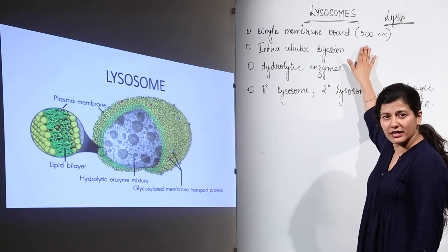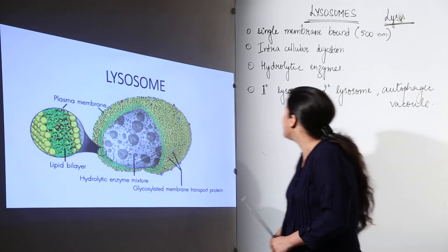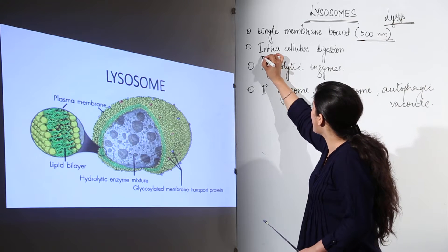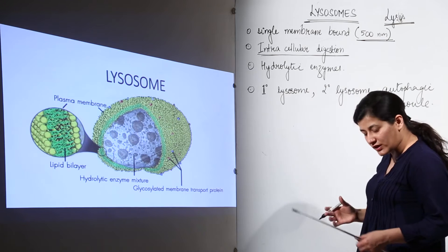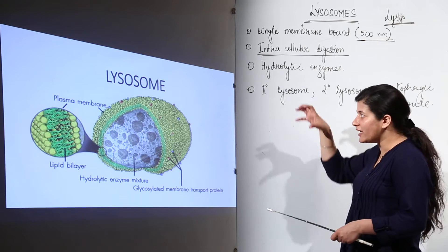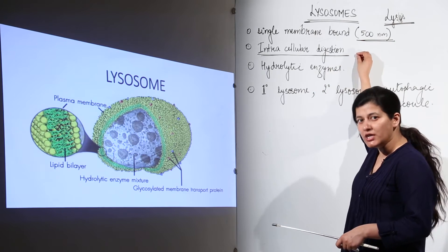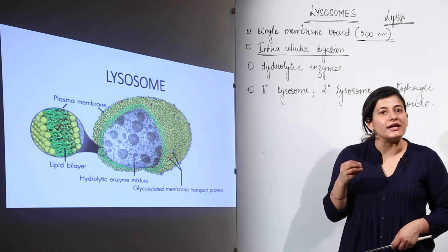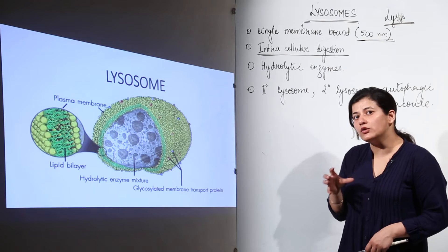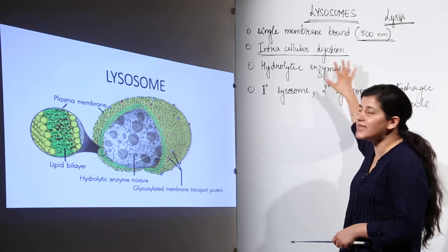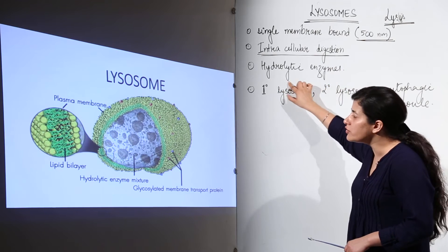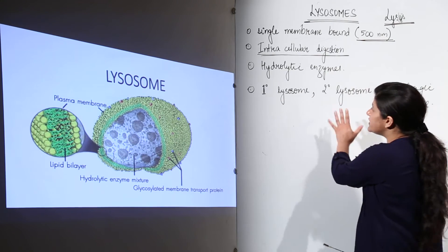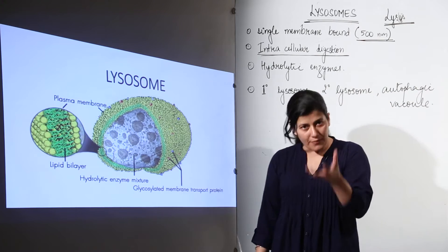It is a single membrane-bound structure. The width of the membrane is around 500 nanometers. This organelle is responsible for intracellular digestion — that means digestion within the cell. Digestion here is not the digestion of eating food; it is the breakdown of a complex molecule into its simpler components. That breakdown requires enzymes. Intracellular digestion takes place with the agency of hydrolytic enzymes, and there is a hydrolytic enzyme mixture inside the organelle.